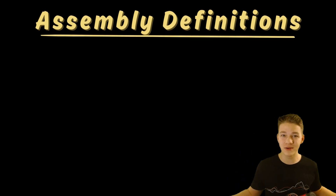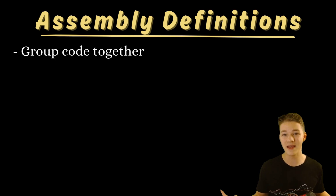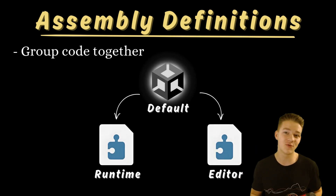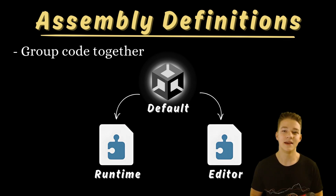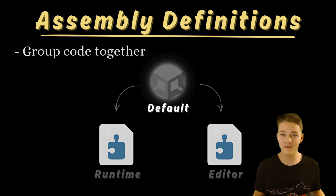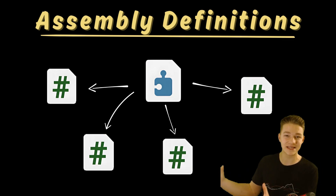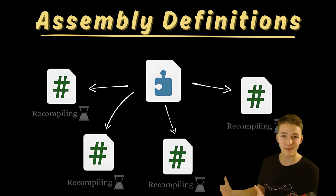This problem can be solved by creating our own assemblies, because all of the code has to be in some assembly. An assembly is just grouping some code together. By default there are only two assemblies: one for the runtime code and the other for the editor-specific code. The problem with having too few assemblies is that if one script in the whole assembly changes, the whole assembly needs to recompile.